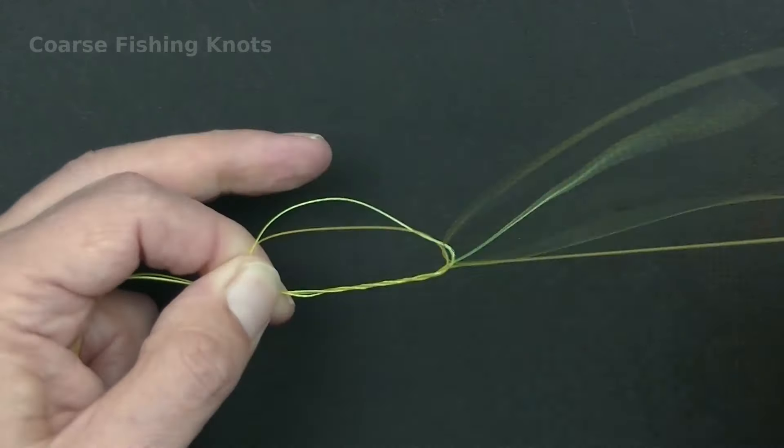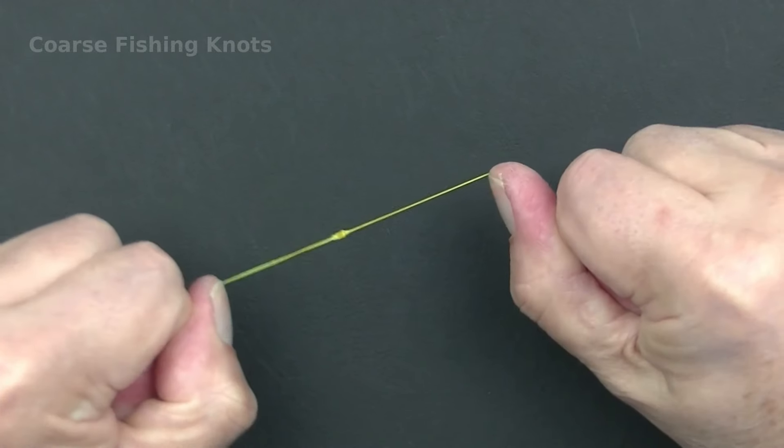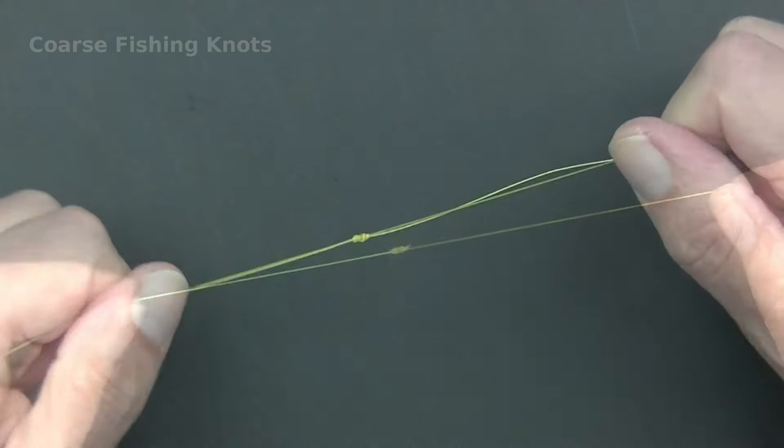It is a very strong, neat, small knot, ideal for bream, skimmers and roach when feeder fishing.